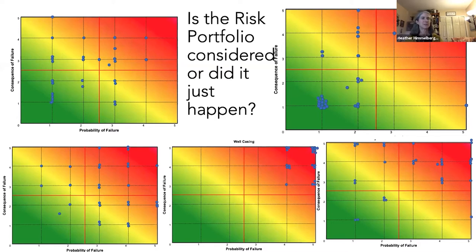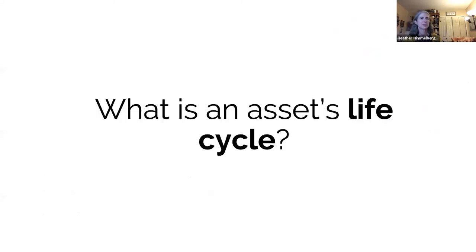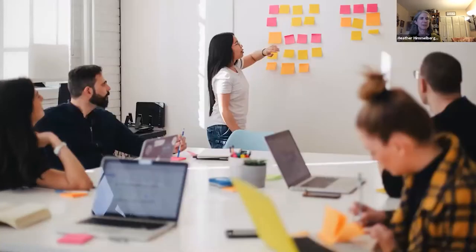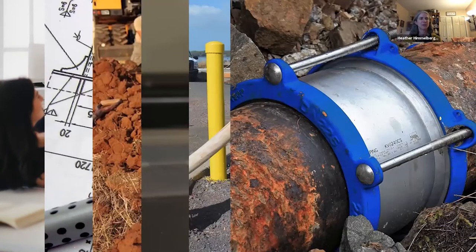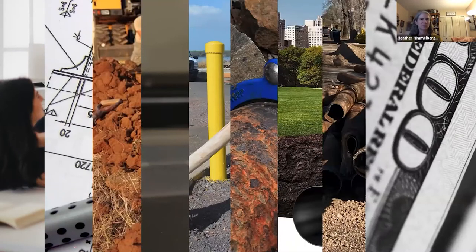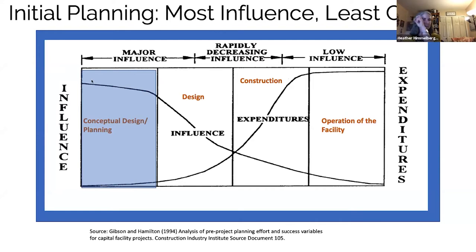Based on the assets you have there's a certain amount of risk — you can let it happen naturally or decide to intervene by adding redundancy to reduce it. Moving on to life cycle costing: that's an examination of the entire life of the asset. The asset's life starts with conceptual design or planning, then moves to detailed design, construction, operation, maintenance, repair, rehabilitation, or replacement. The reason the planning phase matters is that's when you have the greatest influence over the asset at the least cost.